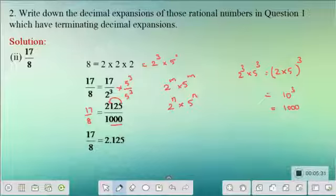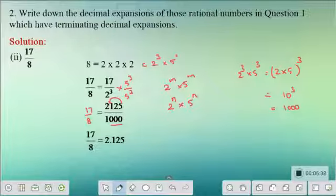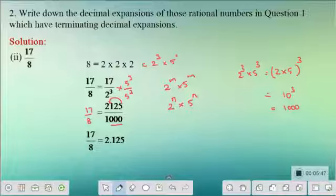It is okay to verify small denominators by long division, but for bigger denominators this method — factorizing the denominator and making the powers of 2 and 5 equal — is much more efficient. Let us try a few more problems for better practice.